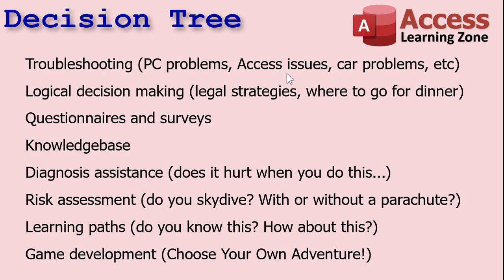My Access issues troubleshooter, for example — go down the list: have you tried compact and repair? Yes or no? Car problems: does the car start? Is the battery connected? Is there gas in the car? Logical decision making, legal strategies, where to go for dinner — do you want Chinese? Sit-down Chinese or take-out Chinese? That kind of stuff.